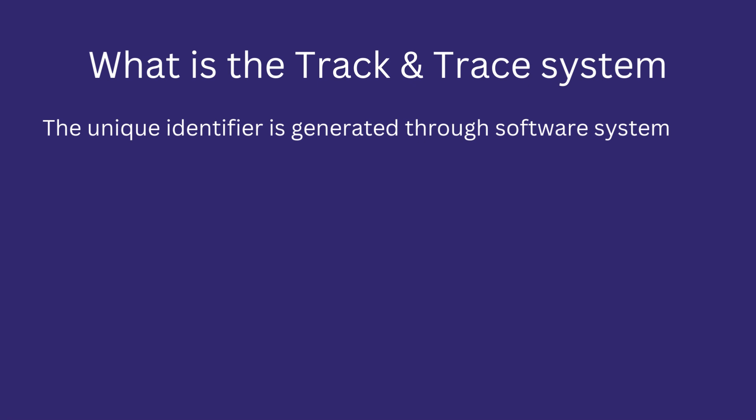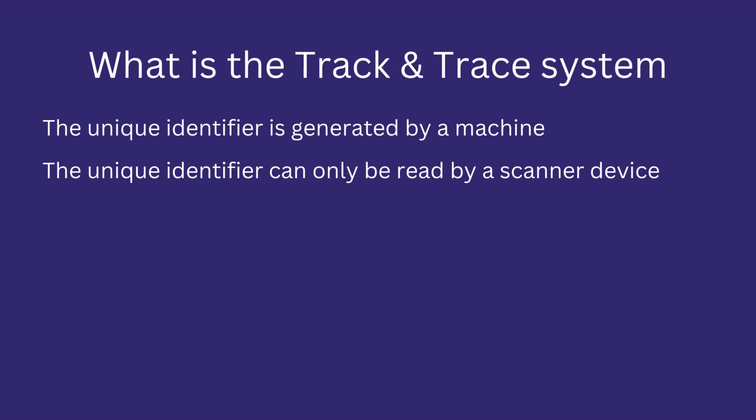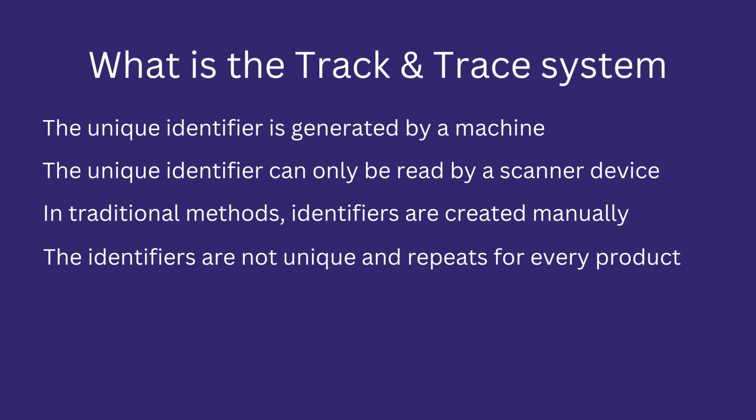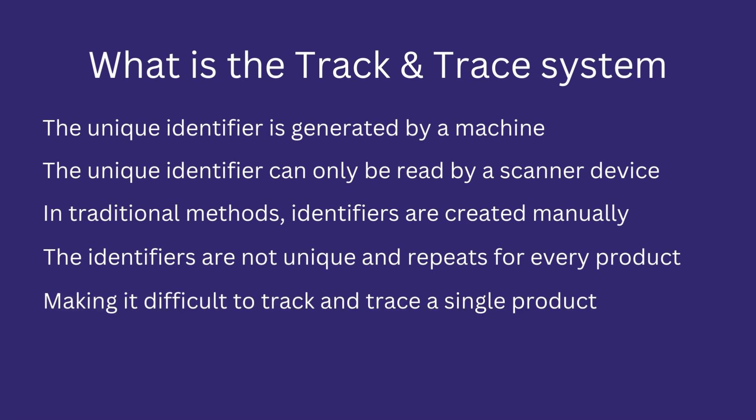The unique identifier is generated through a software system without human involvement, and can only be understood by a scanner, meaning the information is not human readable. In traditional methods, identifiers are generated manually, which simply includes the batch number or common information. These manually generated identifiers are not unique and repeat for all products in a batch, making it difficult to track or trace down to the level of a unit entity — they only give generalized information about the whole batch.